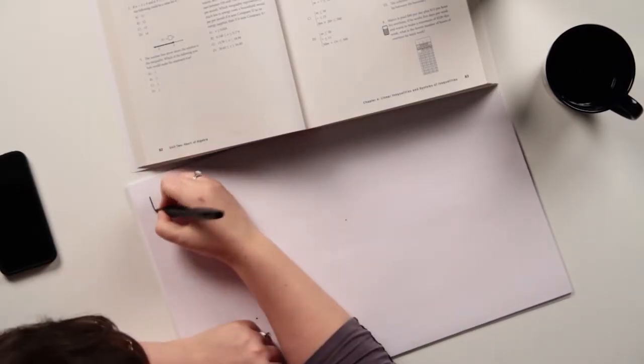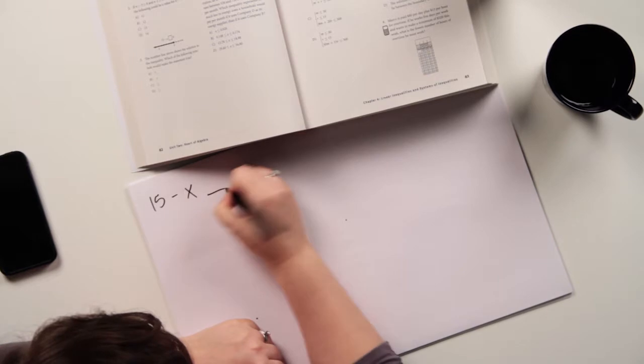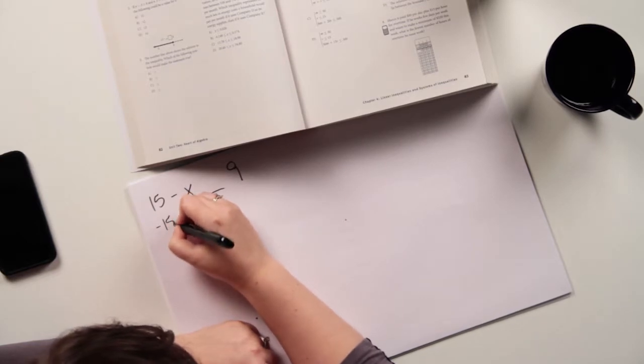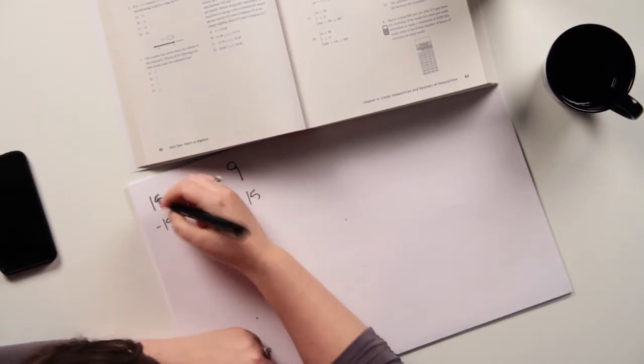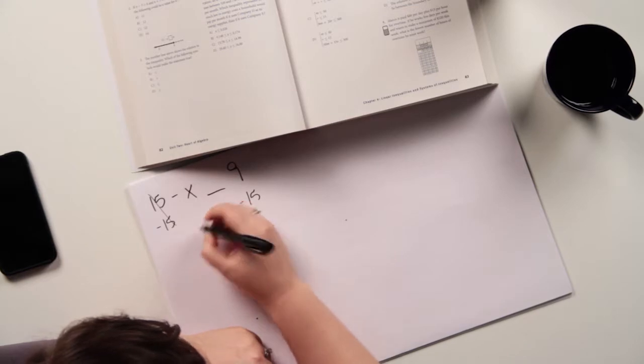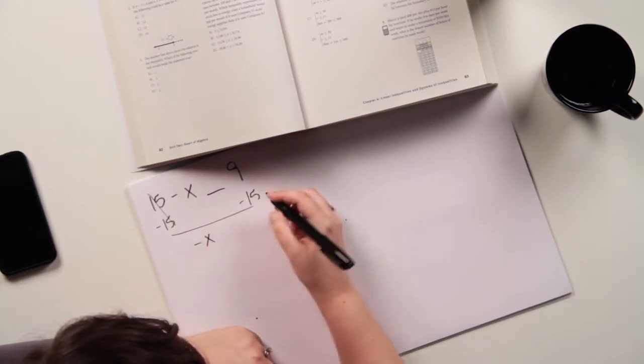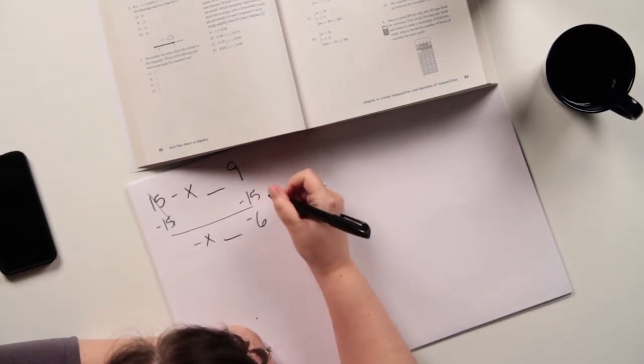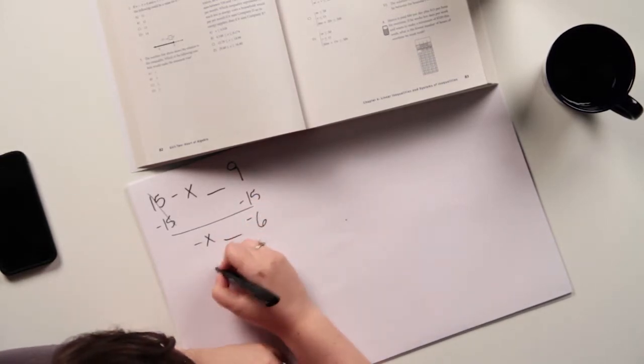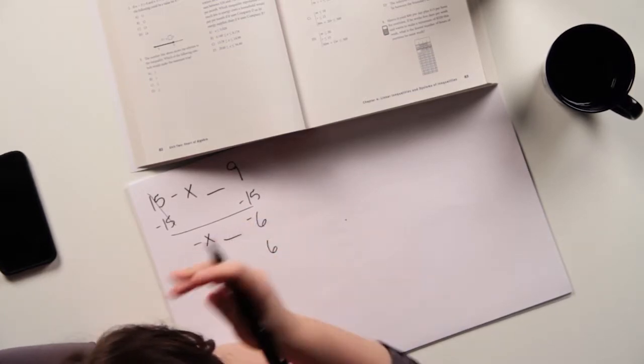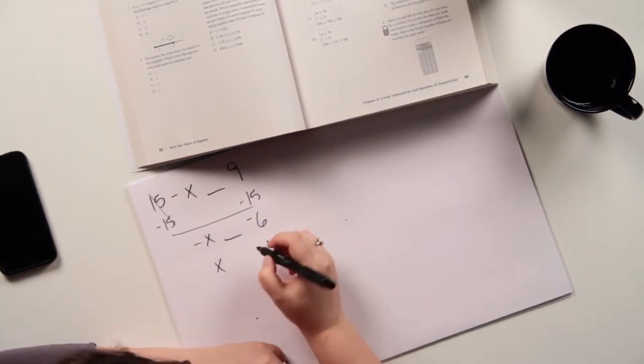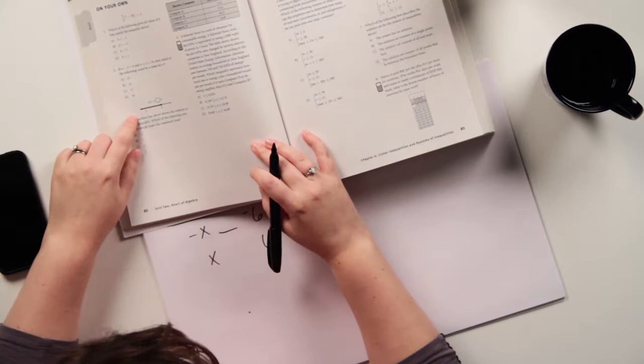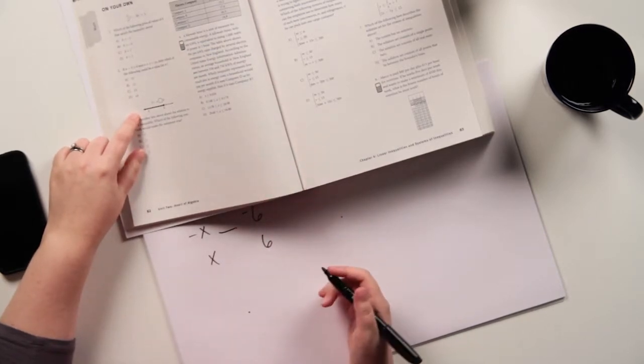So I've got 15 minus X blank 9. And I'm going to subtract 15 on both sides. And I have negative X blank negative 6. And then I change this. So it's going to be X is, according to my thing here, X is less than or equal to 6.